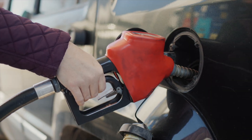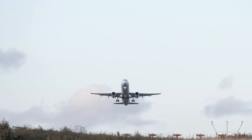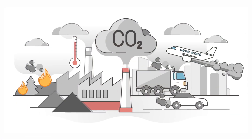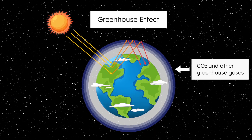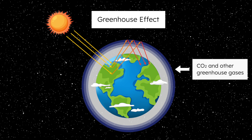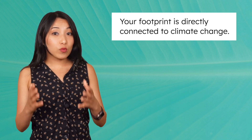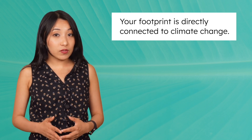Every time we use fossil fuels in cars, planes, factories, or even to charge a phone, carbon dioxide is released into the atmosphere. This greenhouse gas traps heat, warms the planet, and disrupts climate systems. And while carbon is just one part of an ecological footprint, for most people in industrialized countries, it is the largest part. That means your footprint is directly connected to climate change through the carbon it adds to the atmosphere.